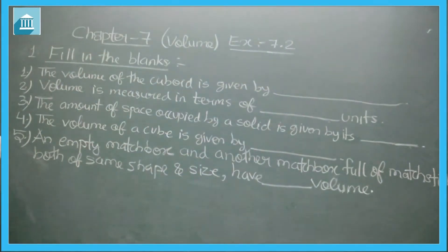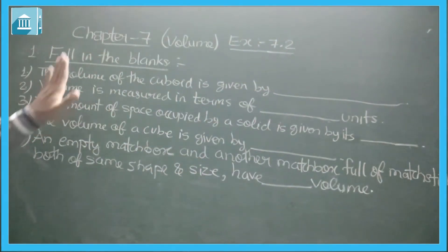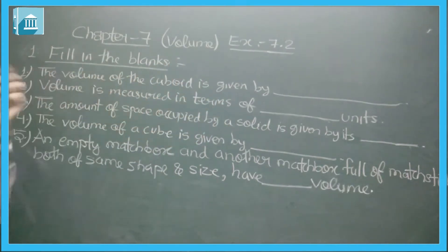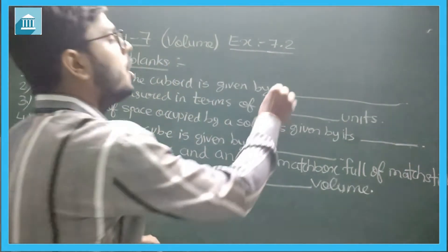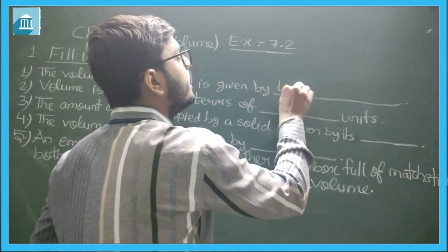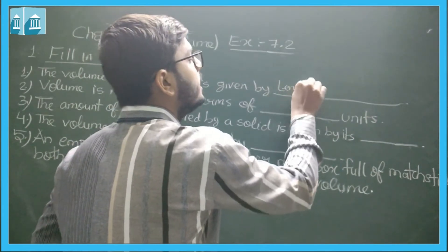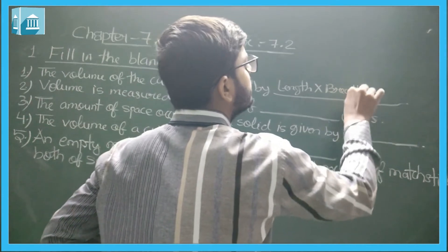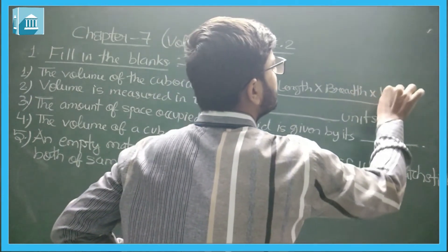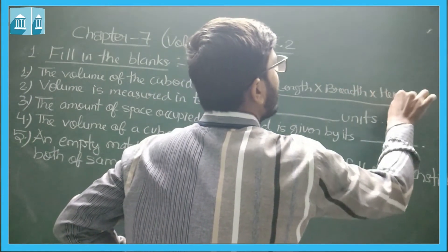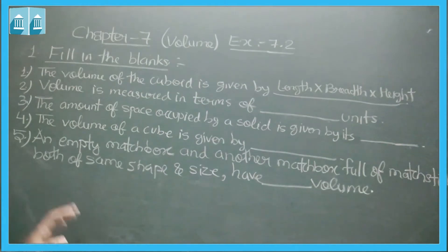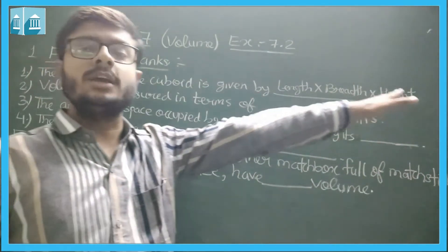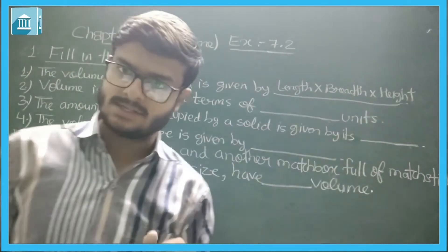The first fill-in-the-blank question is: the volume of a cuboid is given by. We all know that the volume of the cuboid is length multiplied by breadth multiplied by height. The volume of the cuboid is given by length into breadth into height. It's very easy.